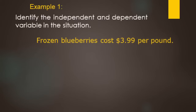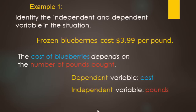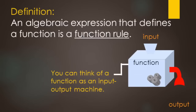Try this one on your own, then come back. Frozen blueberries cost $3.99 a pound. How much they cost depends on how many pounds you buy, so the dependent variable is cost and the independent variable is pounds. Cost is a function of pounds or weight.